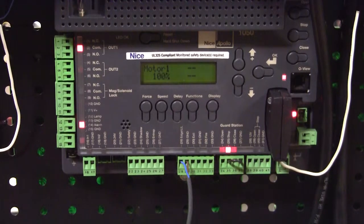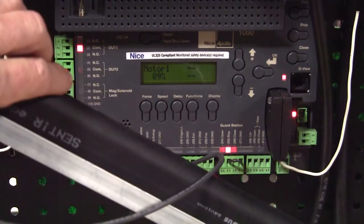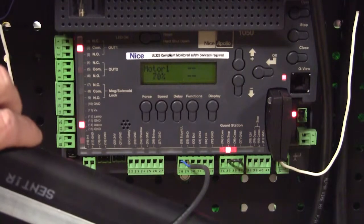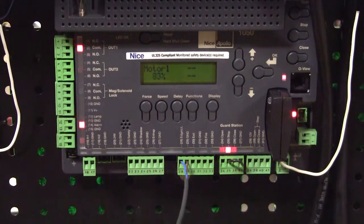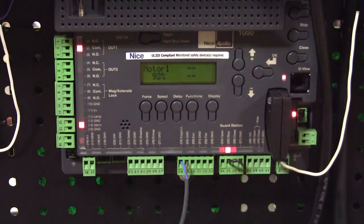Once it starts closing, once again I'm going to contact my edge. I activate my edge. Now my gate is reopening. So you can see this edge is reversing the gate both opening and closing, just like a wrap around edge on the end of a swing gate would.